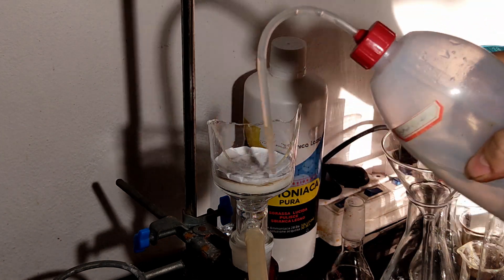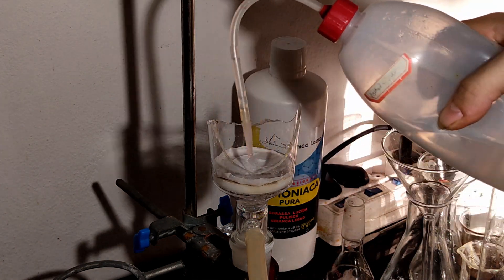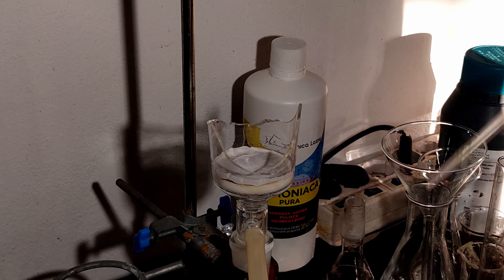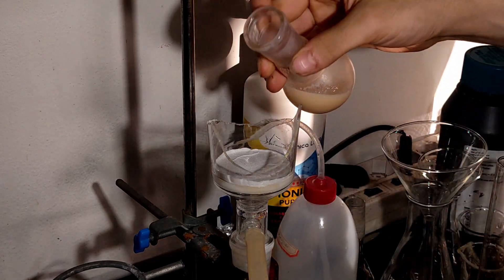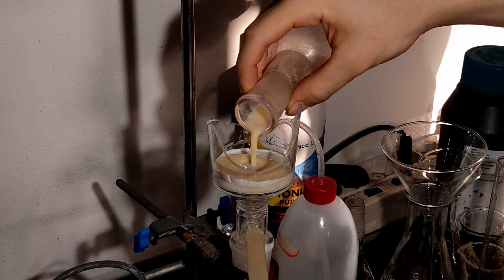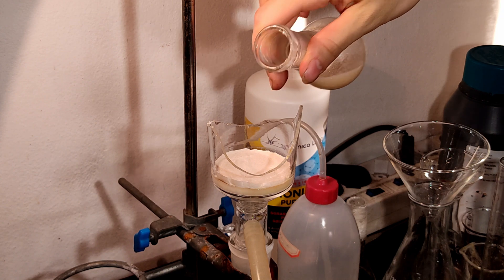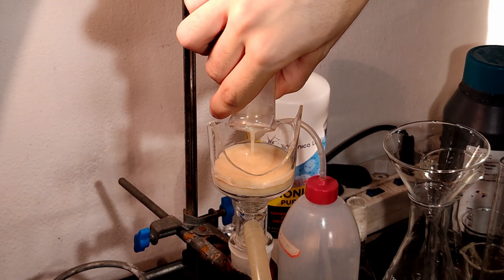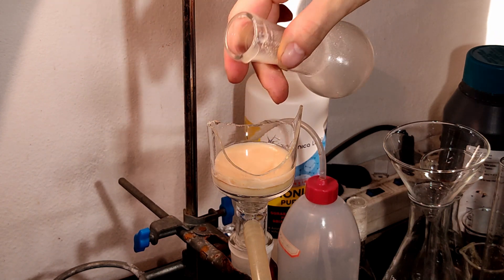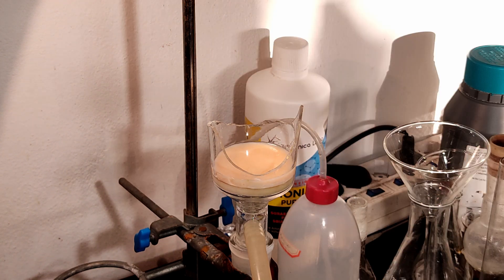When the mixture has cooled down, it was filtered. The precipitate was washed with cold water and put in the desiccator. From the filtrate, a second precipitate was obtained, and the filtration procedure was repeated to collect a second fraction of product.